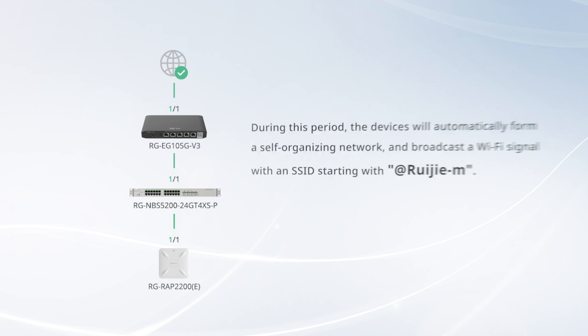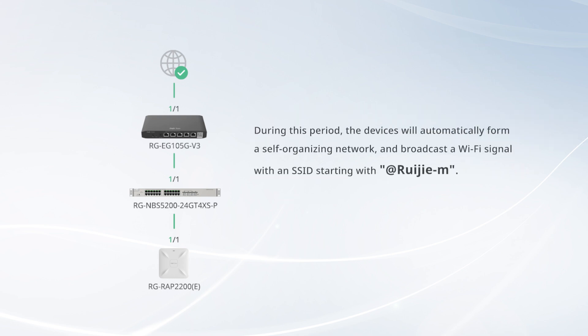During this period, the devices will automatically form a self-organizing network and broadcast a Wi-Fi signal with an SSID starting with the Weijia Rii app identifier.